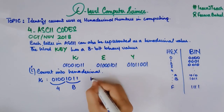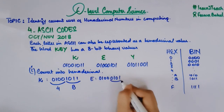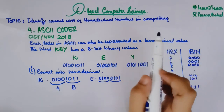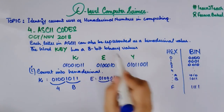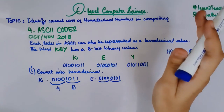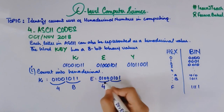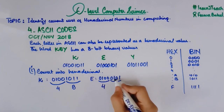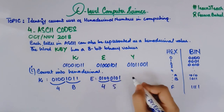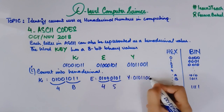Similarly for E, I have 0 1 0 0 0 1 0 1. Making groups of four bits: the upper group 0 1 0 0 is equal to 4, and the lower group 0 1 0 1 is equal to 5. So 45 is the hexadecimal equivalent of E. For Y, I have 0 1 0 1 1 0 0 1.